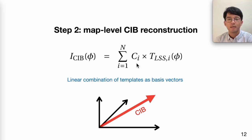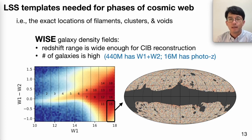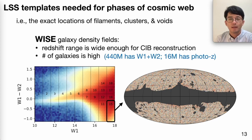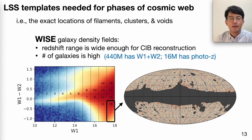The weights C_i will be determined by trying to match the statistical properties measured before. The idea is to use galaxy density fields as large-scale structure templates to reconstruct the CIB. These template galaxies don't need to be the same population as the far-infrared bright galaxies contributing to the 100-micron CIB. The most important thing is that no matter what galaxies we use, they share the same underlying dark matter density field with the CIB.